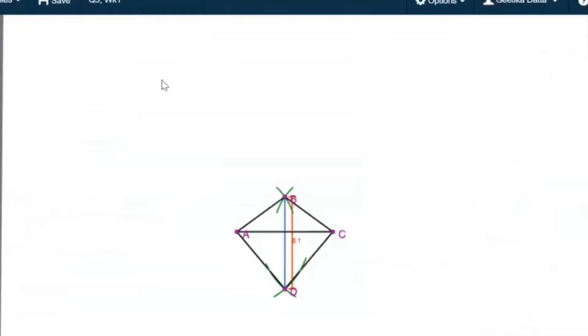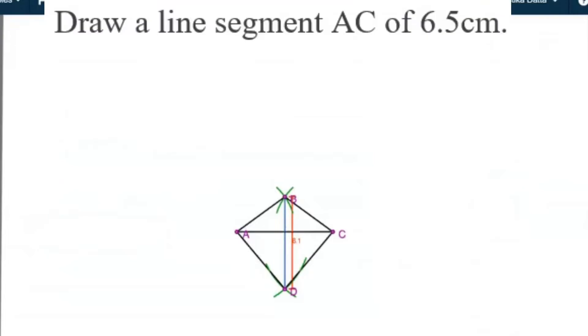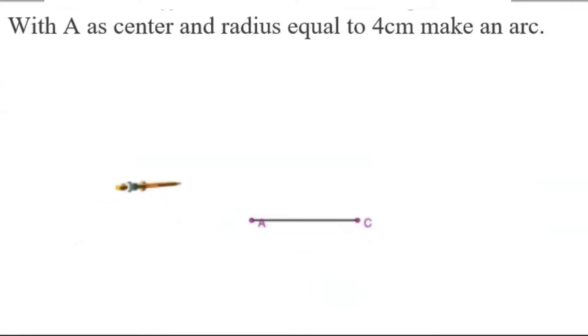So I have used the RoboCompass app to make the construction. Let me tell you the steps of construction. So my first step will be to make a line segment AC equal to 6.5 centimeters. Then now AB is given to me equal to 4 centimeters and BC is also 4 centimeters. So with A as center and radius equal to 4 centimeters, I will make an arc.